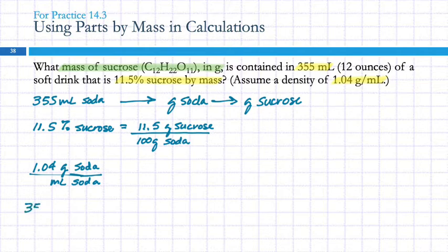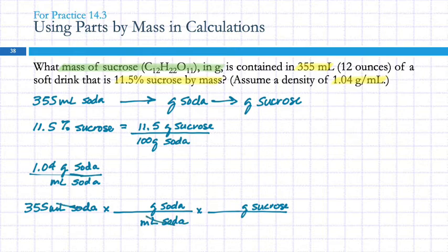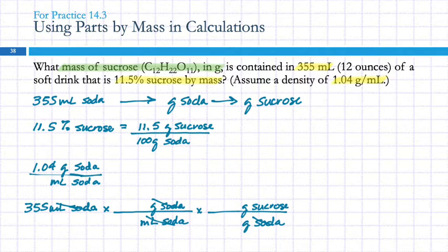So I'm going to write those down: 355 milliliters of soda. Each arrow represents a conversion — first to grams of soda, then to grams of sucrose. I need my units to cancel out: milliliters of soda goes in the denominator here so those units cancel out, and grams of soda goes in the denominator of the next step so those cancel too. This leaves me with the unit of grams of sucrose, which is what I'm trying to find. All the units go in first, and then they tell you where to put the numbers — there's no remembering when to divide or multiply.